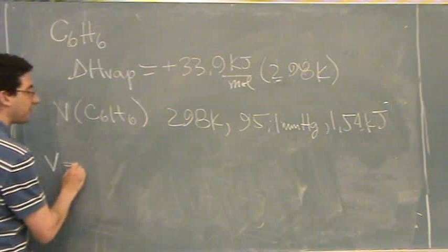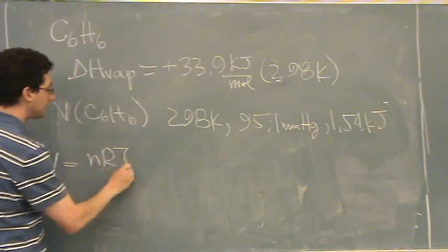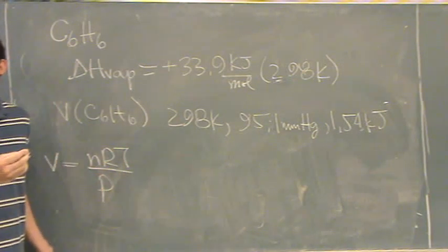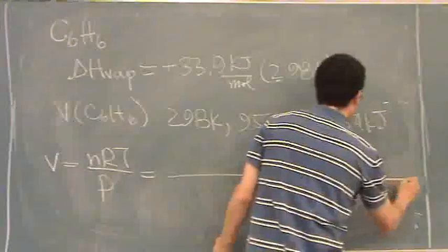It's just going to be one little funny thing on this one. So volume is nRT over P. So let's skip n for a second, that's the weird one. So there's some n. I'll skip n.